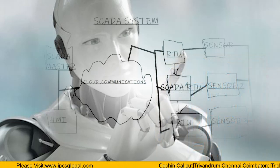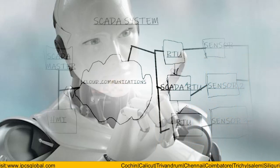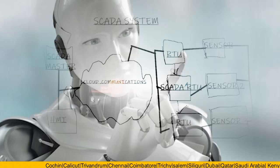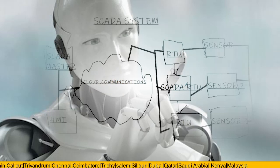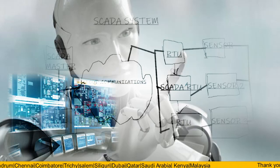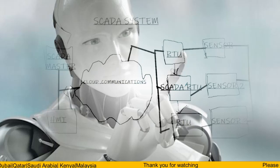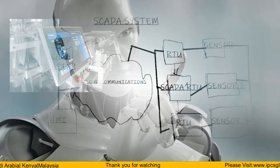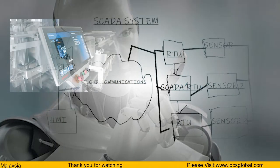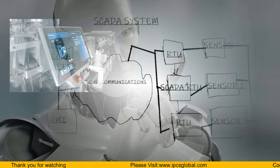The third component is Cloud Communications — like the internet, where all the information is stored so that SCADA can access it. The fourth component is the SCADA Master, which can also be called the control room or operating center where SCADA operations are managed. The fifth component is HMI — the Human-Machine Interface — an interface which connects a person to a machine, a SCADA system, or a PLC.